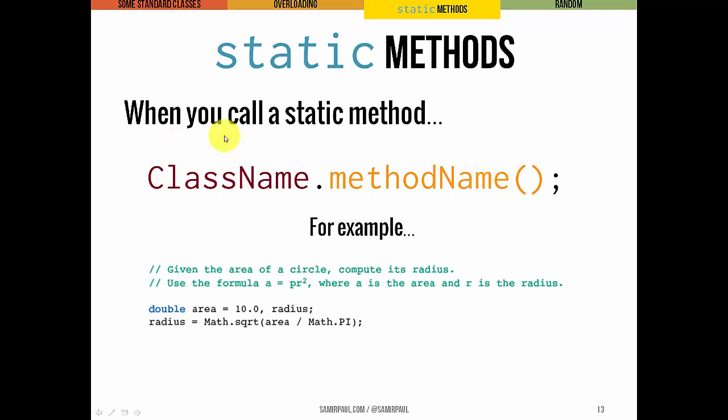ClassName.MethodName. So whatever class that method is defined in, instead of using a particular object, a particular instance of that class here, you'll just use the class name. So an example looks like this. If we're given the area of a circle and we want to compute its radius,